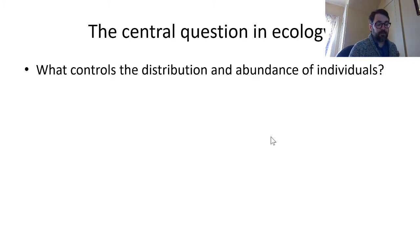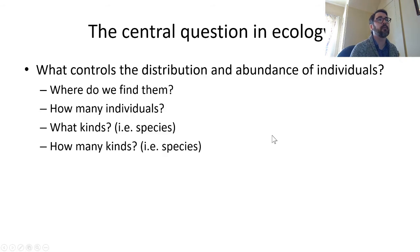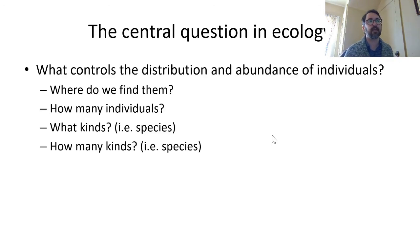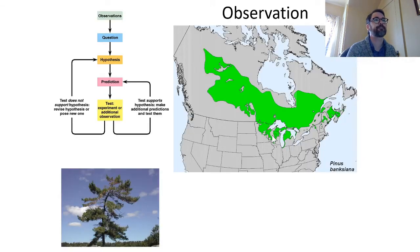Based on those definitions, there is a single central question that underpins almost everything in ecology: what controls the distribution and abundance of individuals? You can ask this in many ways — where do we find individuals, how many are there, what kinds are there, how many kinds are there — but all of these are really asking the same fundamental question.